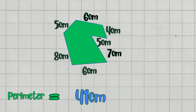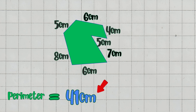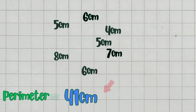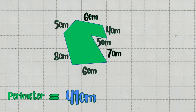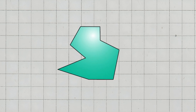Add the last side: 35 cm plus 6 cm equals 41 cm. Final answer: the perimeter of this irregular heptagon is 41 cm. It's not wrong to add all the sides in any order you want. Just add them all, as long as you don't forget any of the numbers.